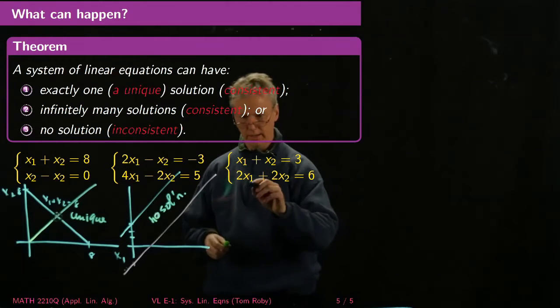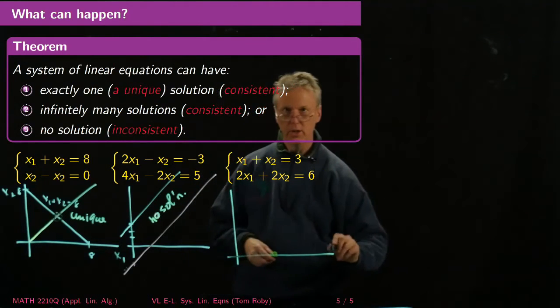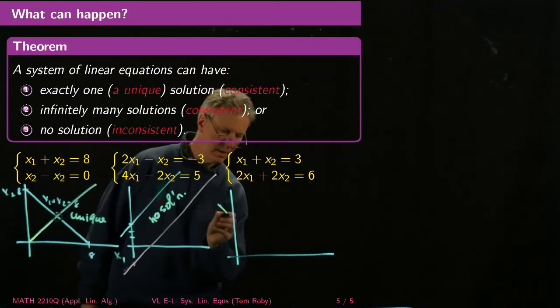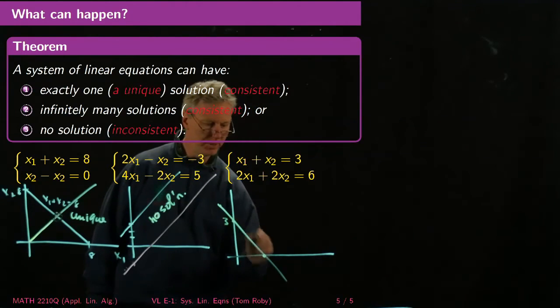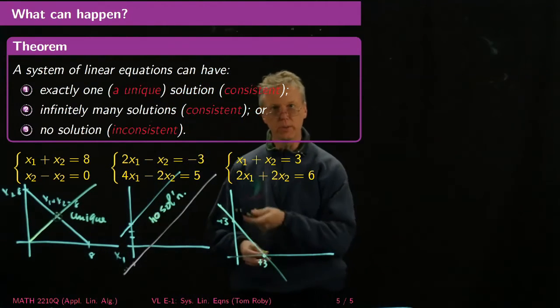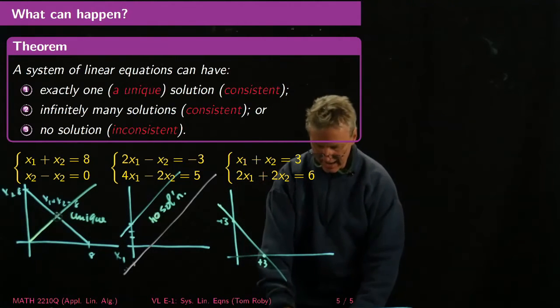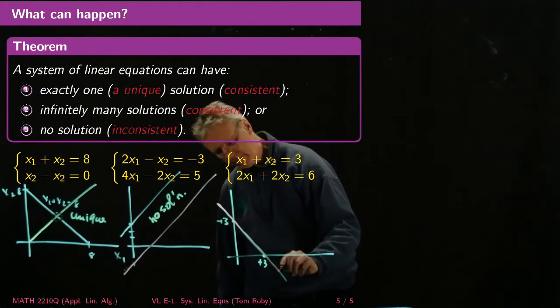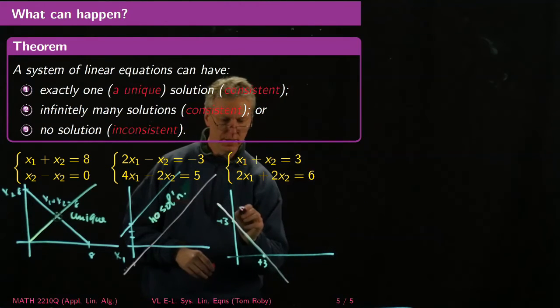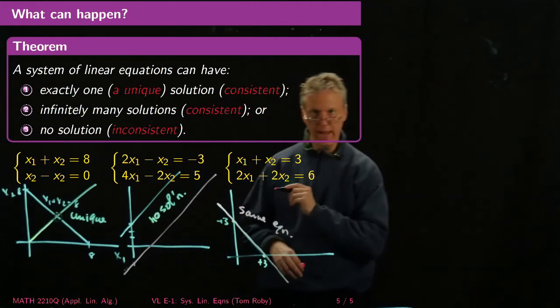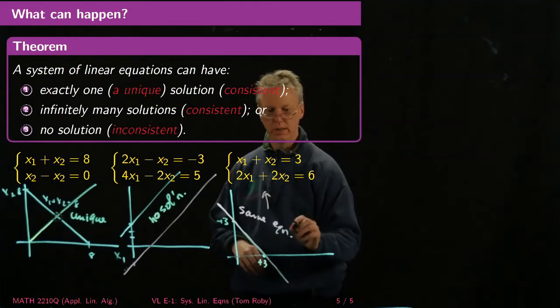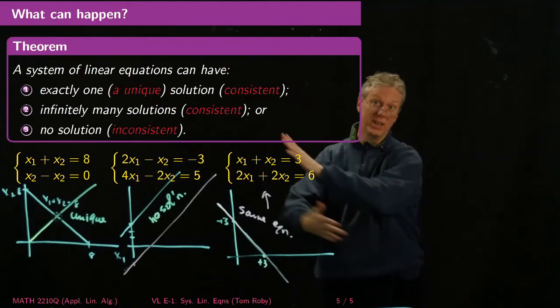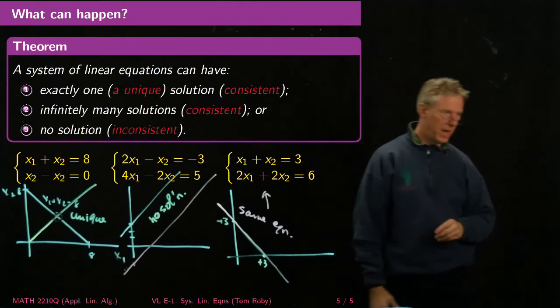And now finally, over here, in this last situation, what have we got? We've got two equations, x₁ + x₂ = 3, so again that's going to look more or less like this, a slope of -1 and intersecting at +3 and +3 here. And now what's 2x₁ + 2x₂ = 6? Well, that's really exactly the same equation, okay? So it's hard to draw on it, but I guess I'm just trying to draw the same equation. So it's the same equation, and that means that they're drawing the same line, and so there's infinitely many solutions.